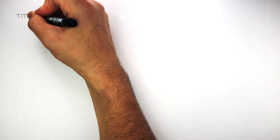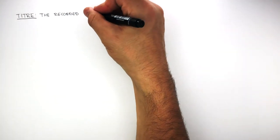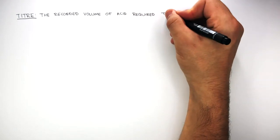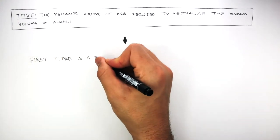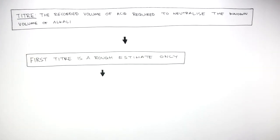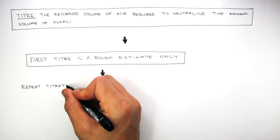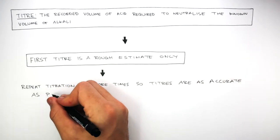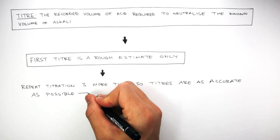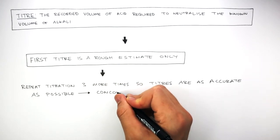The titan is the recorded volume of acid required to neutralise the known volume of alkali, and the first titan is a rough estimate only. Therefore, you need to repeat the titration three more times so titans are as accurate as possible, until the titans are concordant.